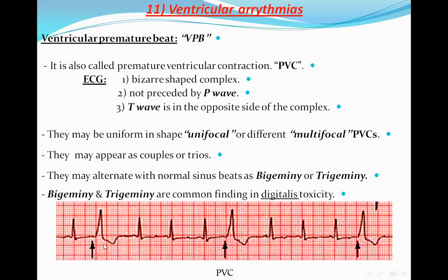If the PVC shape differs from one beat to another in the same lead, they are called multifocal PVCs, meaning they come from different foci within the ventricles. They may appear as couplets (two successive PVCs) or triplets (three successive PVCs), and they may alternate with normal beats. When one PVC follows every three sinus beats it is called quadrigeminy; when every other beat is a PVC it is bigeminy; and when every third beat is a PVC it is trigeminy. Bigeminy and trigeminy are common findings in digitalis toxicity.